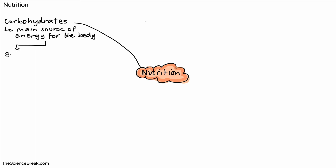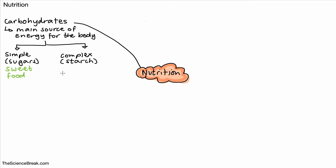We can split carbohydrates into two types. The first type is called simple carbohydrates, which are the sugars. The second type is called complex carbohydrates, often referred to as starch. Sweet foods are examples of simple carbohydrates, while complex carbohydrates are found in things like potatoes, bread, pasta, and rice. Complex carbohydrates release energy more slowly than sugars do.